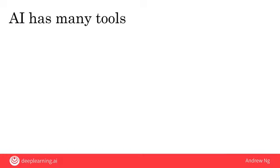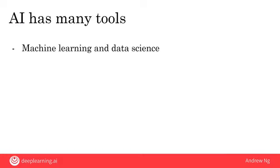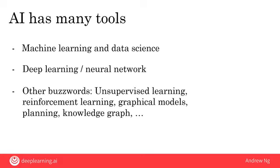AI has many different tools. In this video you learned about machine learning, data science, deep learning, and neural networks. You might also hear other buzzwords in the media like unsupervised learning, reinforcement learning, graphical models, and planning knowledge graphs. You don't need to know all of these, but they are just other tools for getting computers to act intelligently. The most important tools to know are machine learning and data science, as well as deep learning and neural networks, which are a very powerful way to do machine learning.